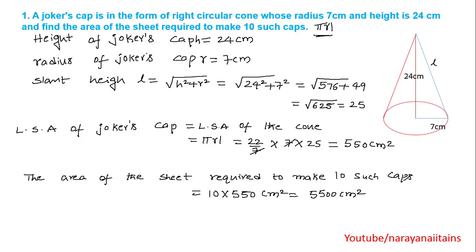So, this area is surface area of the cone, formula pi × r × l. R is 7 cm, L is the slant height. Formula: slant height = √(h² + r²) = √(24² + 7²) = 25. So lateral surface area of the joker's cap is pi × r × l = (22/7) × 7 × 25, radius means 7. Slant height already found is 25. That gives 550 cm².